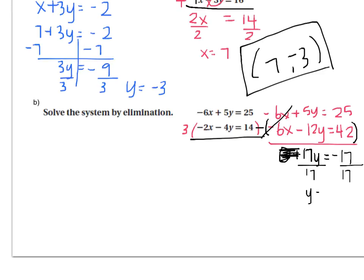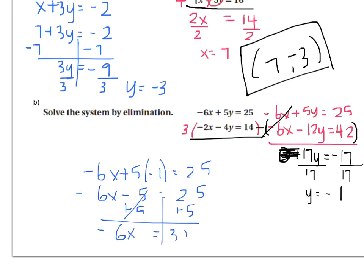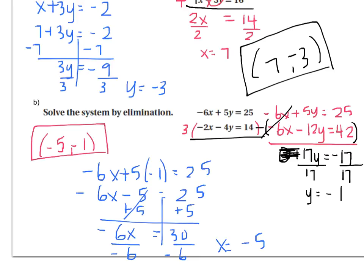So now I'll just solve and I get y is negative one. So I'll go and plug in into one of the equations. It doesn't matter which. Add five, negative six x equals thirty, so x equals negative five. So the solution to this is negative five, negative one. And we'll practice more of these in class, obviously. These are more complicated than the first example.